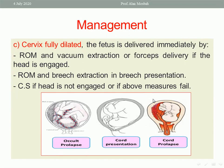If the cervix is fully dilated, the fetus is delivered immediately by rupture of membranes and vacuum extraction or forceps delivery if the head is engaged, so long as there is no other obstetric contraindication. In case of breech presentation, rupture of membranes and breech extraction under anesthesia may be performed if experienced, with no contraindication for vaginal delivery. Caesarean section may be needed if the head is not engaged or if the above measures fail.